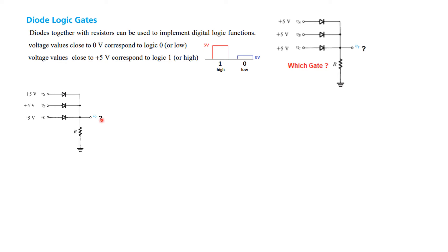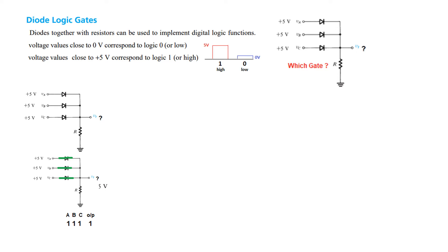The first question is: what will be the voltage here? Since the input is 5V, the anode is 5V and the cathode is grounded through the resistance, therefore this diode is forward biased, this is also forward biased, and this is also forward biased. I have drawn it by short-circuiting the diode, so this 5V will directly appear at this output point. So we can say that the output is 5V, which in binary terms means input is 1, 1, 1 and output is also 1.